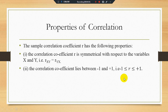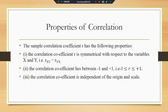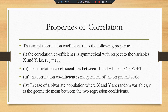The correlation coefficient lies between minus one and plus one. Keep in mind that the estimated value of the correlation always lies between minus one and plus one. Third, the correlation coefficient is independent of the origin and scale — there is no concept of origin and scale for the correlation coefficient. Fourth, in case of bivariate population where x and y are random variables, r is the geometric mean between the two regression coefficients.